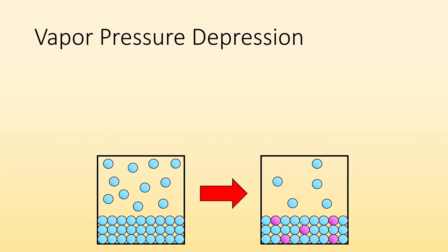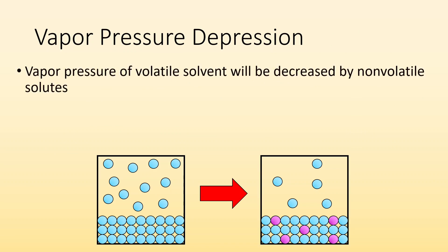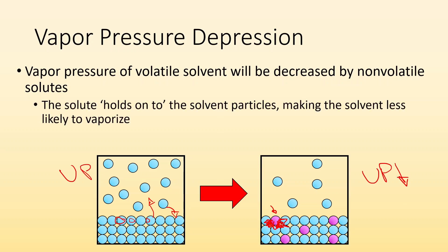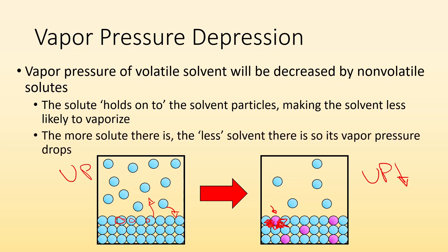Vapor pressure depression just means that the vapor pressure of a volatile solvent will be decreased by a non-volatile solute. We know vapor pressure — liquid particles are all moving around, some go into the vapor phase, some vapors condense, we get equilibrium, and the pressure from them is the vapor pressure. If we start adding some solutes, they want to hold on to the solvent particles, making the solvent less likely to vaporize, which decreases the vapor pressure. Also, if there's more solute, there's less solvent, which means the vapor pressure decreases as well.